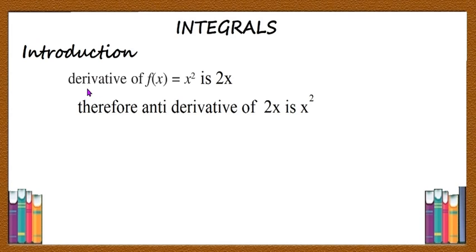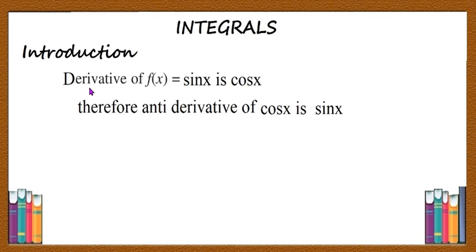Let us take the derivative of the function f of x equal to x square. You know that derivative of x square is 2x, and therefore anti-derivative of 2x is x square. Similarly, if you take the derivative of f of x equal to sin x, which is cos x, therefore anti-derivative of cos x is sin x.